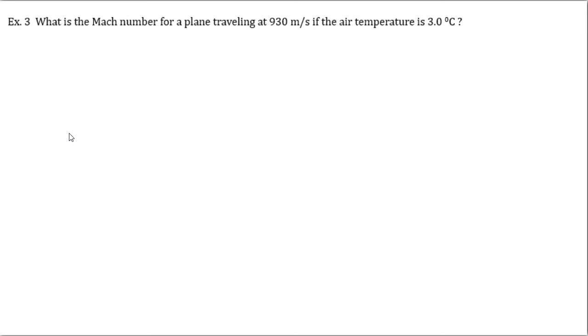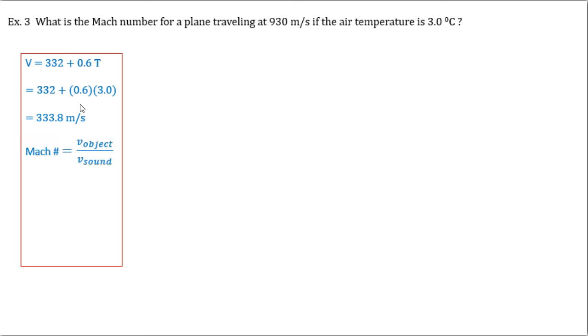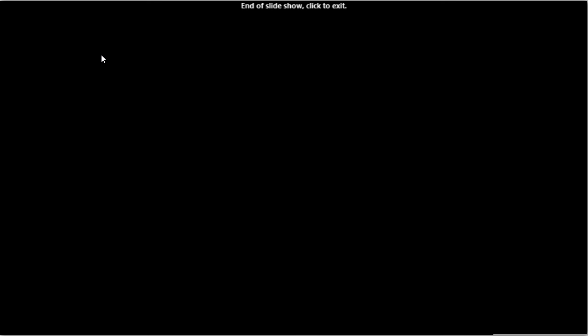And for the last question, what's the Mach number of plane traveling at 930 meters per second if the air temperature is 3 degrees Celsius? So you already know the speed of the plane. You need to know what's the speed of sound when it's 3 degrees Celsius. So you need to use the formula we went over today in class again. Velocity of sound is 332 plus 0.6 times T, and the T is the temperature. So that's your speed of sound at 3 degrees. So Mach number is the velocity of the object divided by the speed of sound. Input your numbers, and you come out with 2.8. So the plane is traveling 2.8 times faster than the speed of sound. All right. That's it, folks.